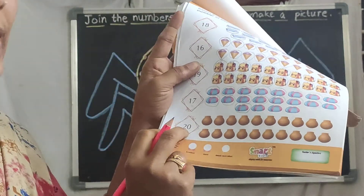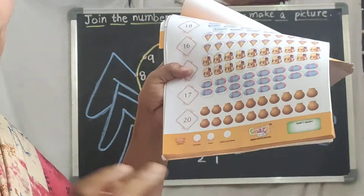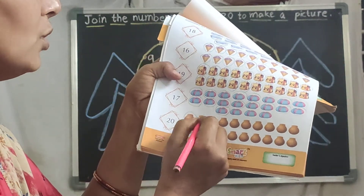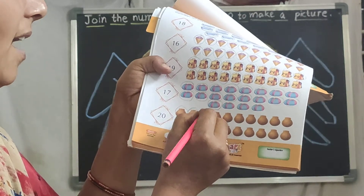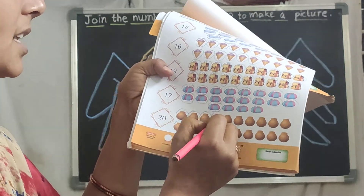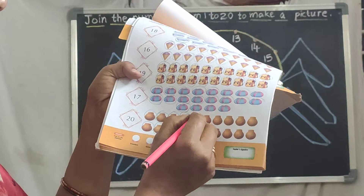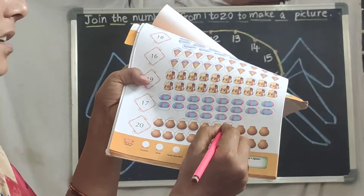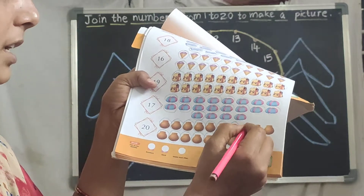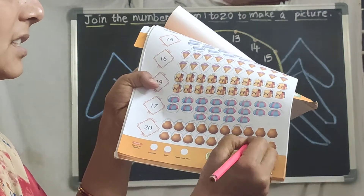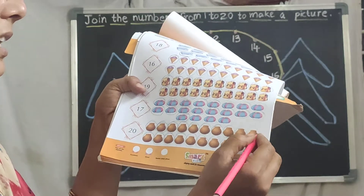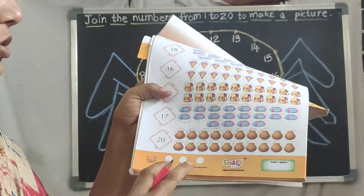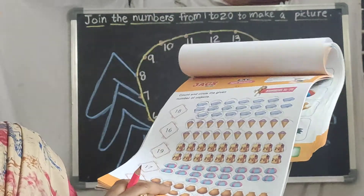See what is the number 20? Circle 20 bags. 1, 2, 3, 4, 5, 6, 7, 8, 9, 10, 11, 12, 13, 14, 15, 16, 17, 18, 19, 20. Like this, you should complete this page.